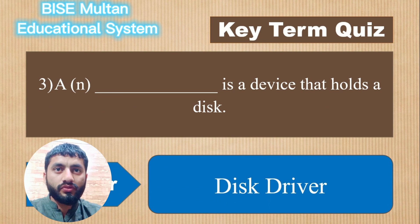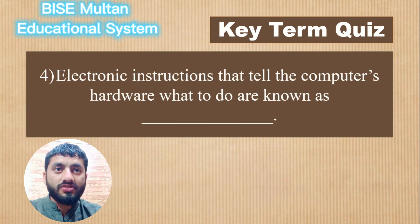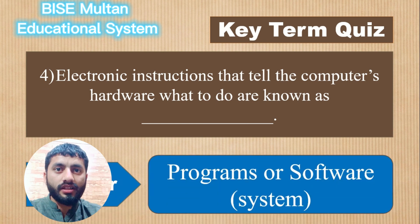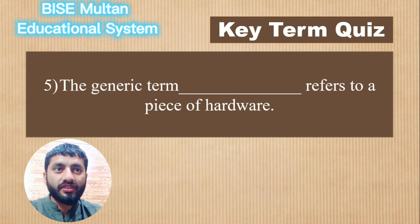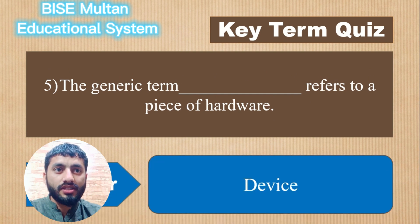Question 4. Electronic instructions that tell the computer's hardware what to do are known as blank. The answer is Programs or Software. Question 5. The generic term blank refers to a piece of hardware. The answer is Device.